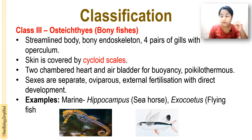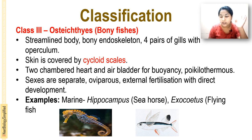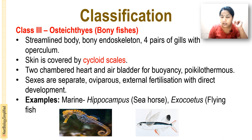Both Chondrichthyes and Osteichthyes have a two-chambered heart and are poikilotherms — cold-blooded animals. Osteichthyes have an air bladder, so they do not need to keep swimming to avoid sinking, unlike sharks. Sexes are separate, they are oviparous, and have external fertilization with direct development.